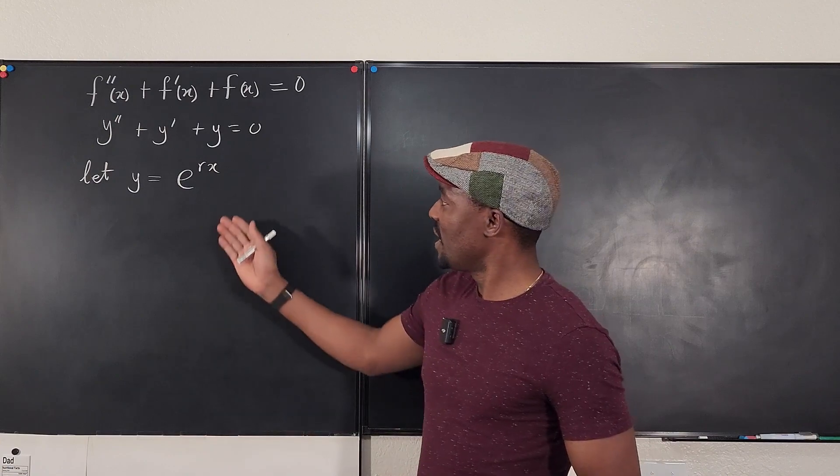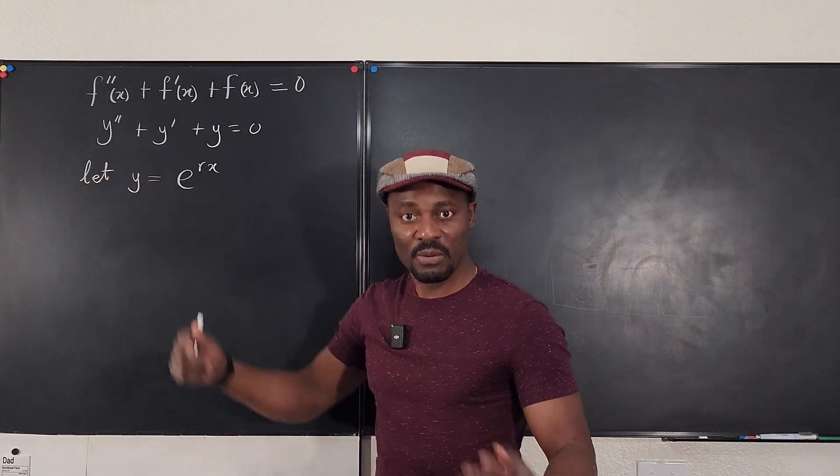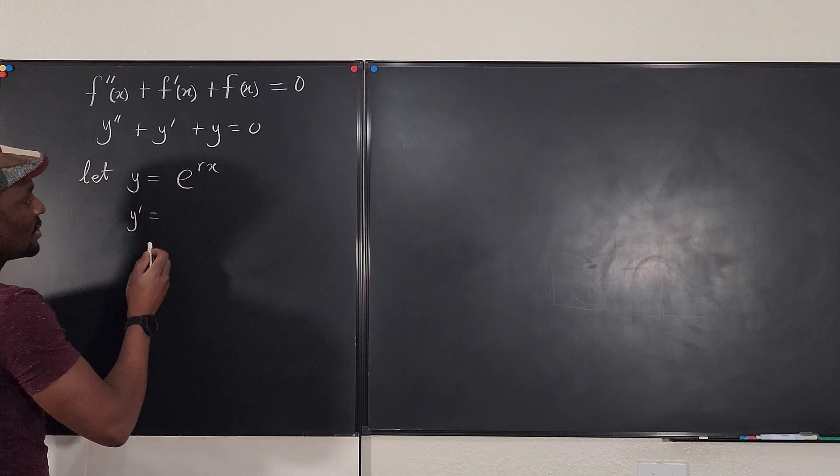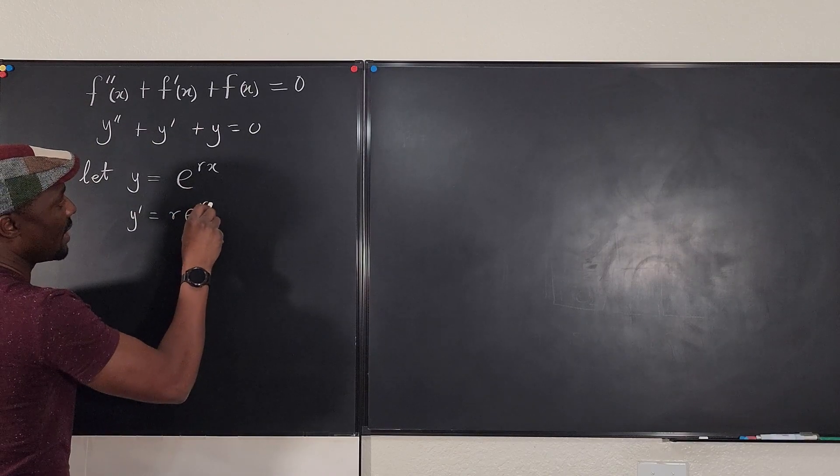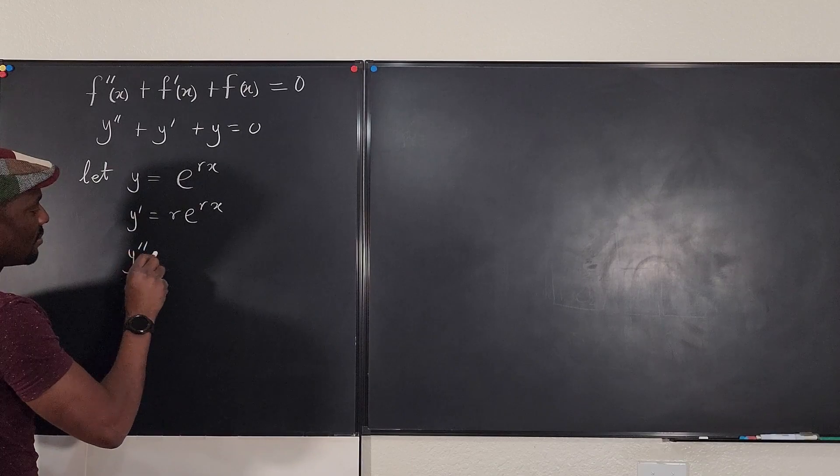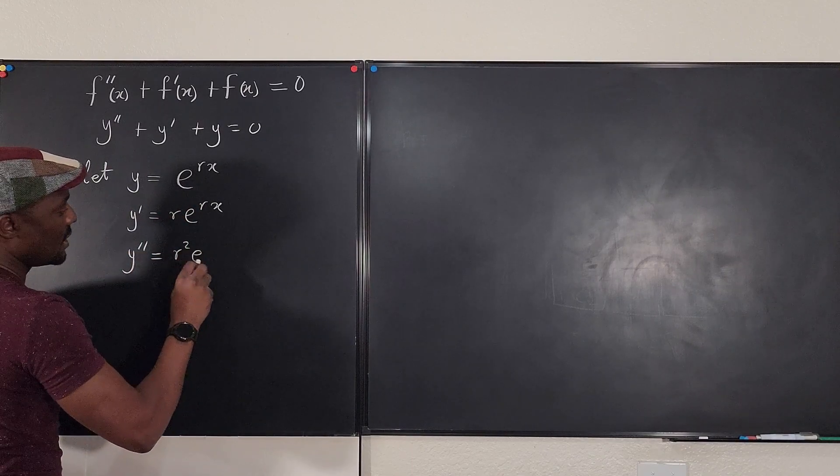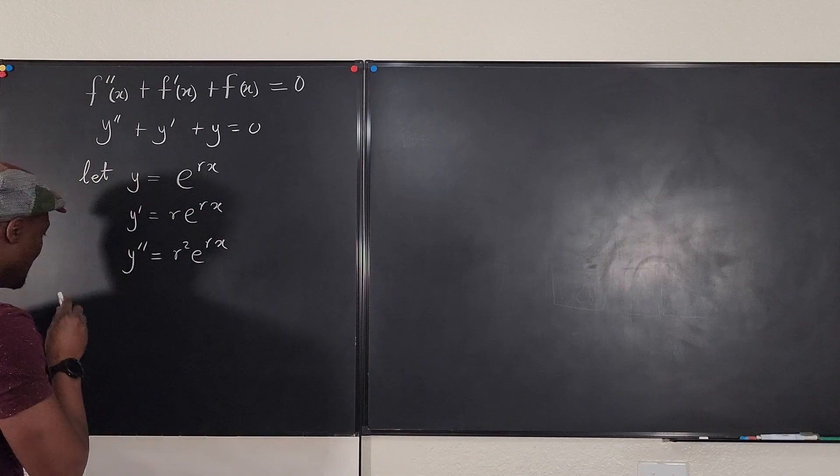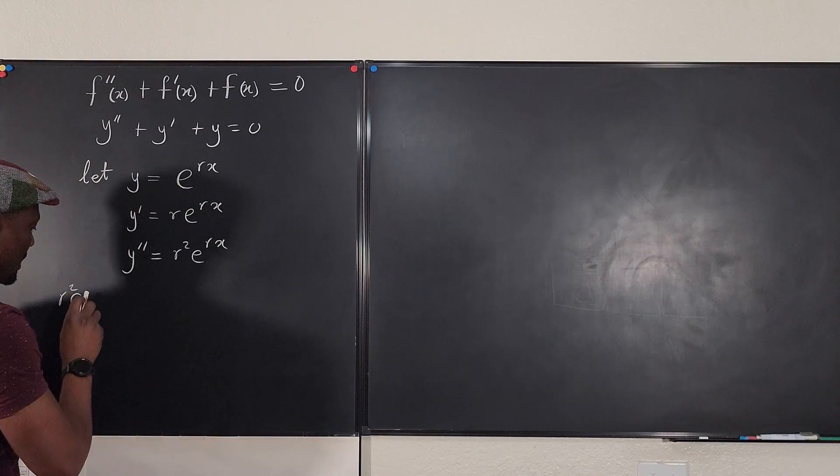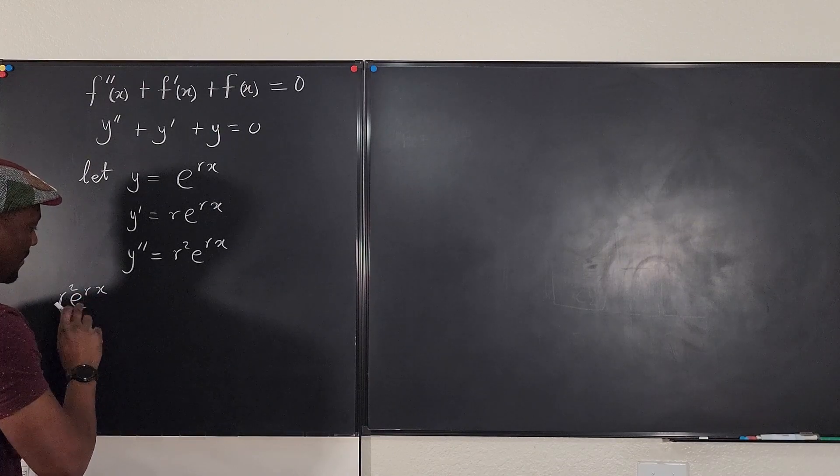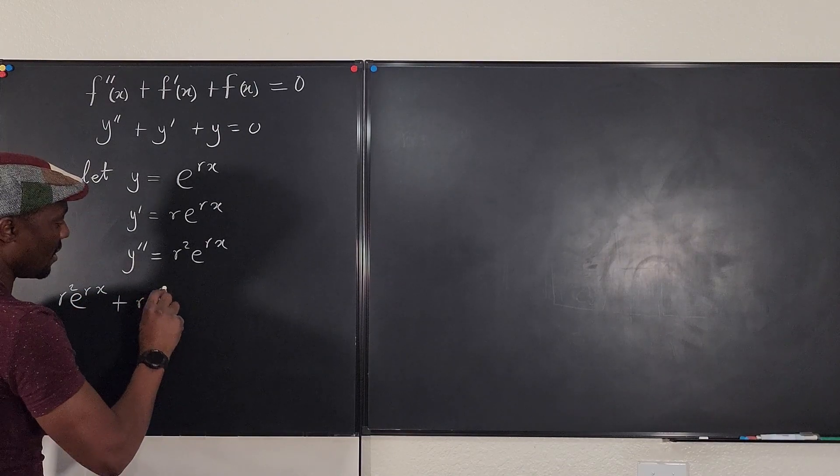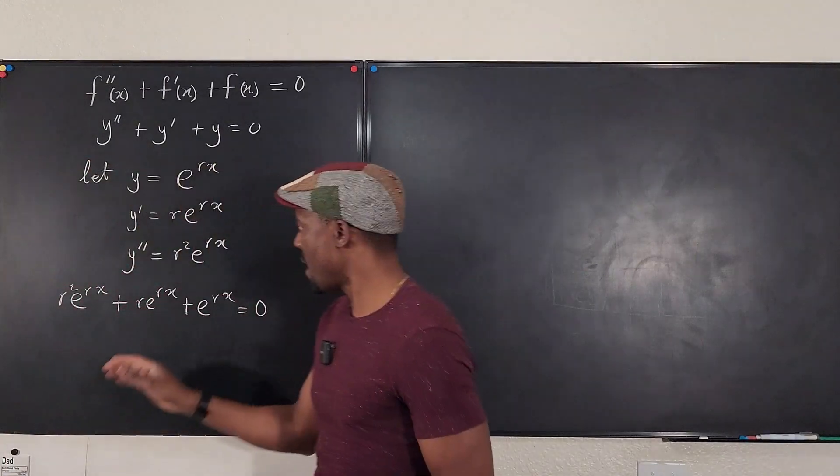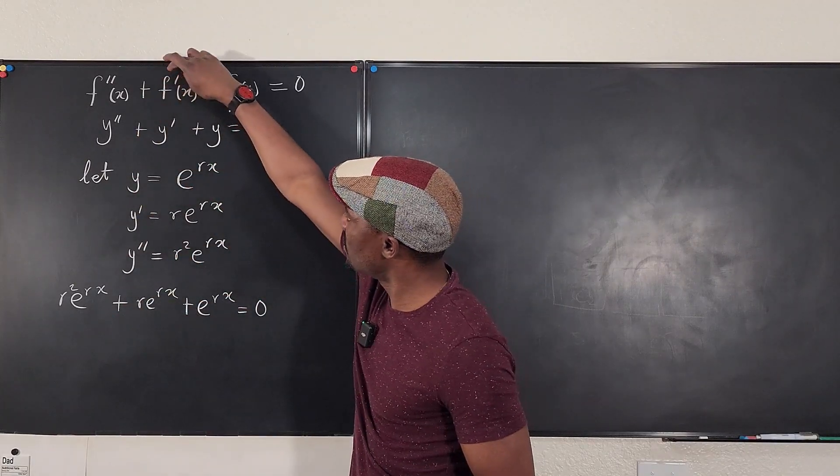So the first thing we do is try to find what y prime is and what y double prime is. We're going to say that y prime is the derivative of this function, which is going to be r e to the rx. And we're also going to find y double prime, which is going to be r squared e to the rx. So we have all the three ingredients for this equation and we can as well just write these and say r squared e to the rx plus r e to the rx plus e to the rx equals zero.